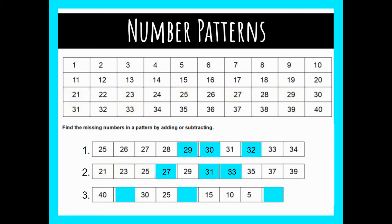Let's try one more. In this pattern I'm going to do something a little different — I want to solve the end of the pattern first. When you're solving for patterns you don't always have to start with the first blank. I see at the end of my pattern that's where my three numbers are grouped together: 15, 10, and 5, and I'm going to put those on the number line.